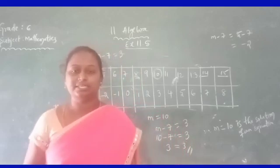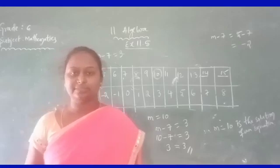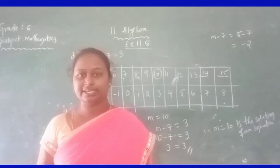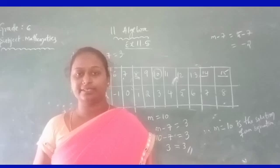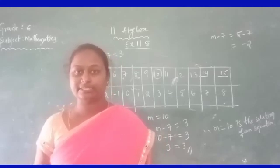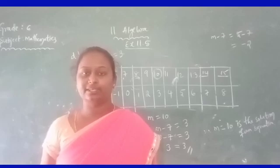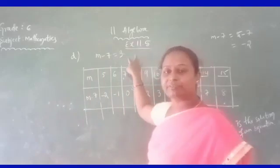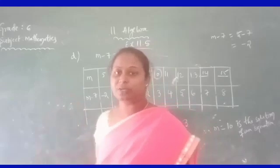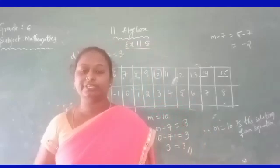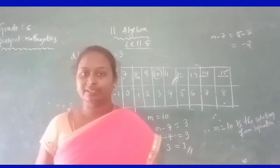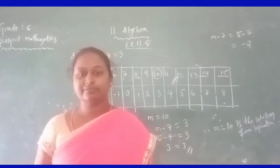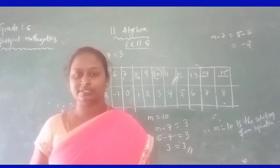Now you have completed the total chapter on algebra. Topics covered include: what is algebra, how algebraic expressions are formed, what are constants and variables, patterns using matchsticks, rules of a pattern, rules from arithmetic, commutative law, commutativity of addition and multiplication, multiplication over addition, what is an equation, what is the solution of an equation, and how to find the solution. Practice with example problems and exercise problems. Goodbye, children.